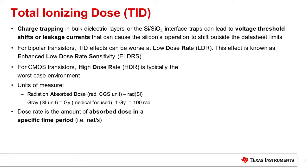For a TID exposure, kilorads is the most common term used for expressing radiation damage in electronics. RAD stands for radiation absorbed dose. The medical community tends to use gray as a radiation unit, which is an international standard unit where one gray equals 100 RAD.